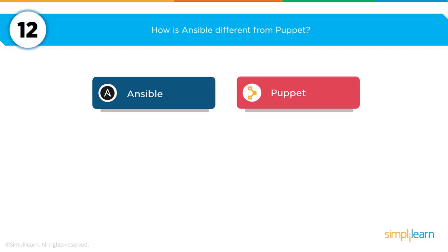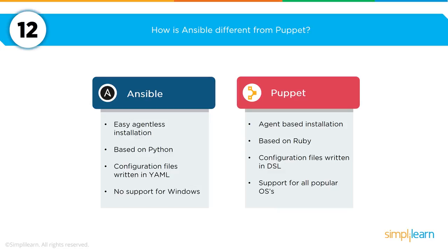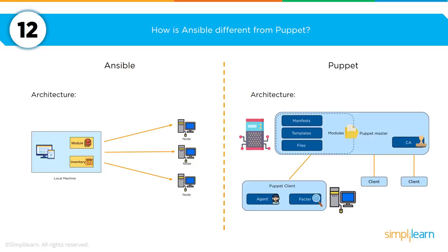A question you will be asked is to provide the differences between Ansible and Puppet. Ansible features easy agentless installation, is based on Python, configured with YAML, and has no support for Windows. In contrast, Puppet is agent-based, written in Ruby, uses DSL for configuration files, and has support on all popular operating systems. Architecturally, Ansible has a much simpler push-only architecture, whereas Puppet has a more complicated but sophisticated architecture that supports a complete managed environment.